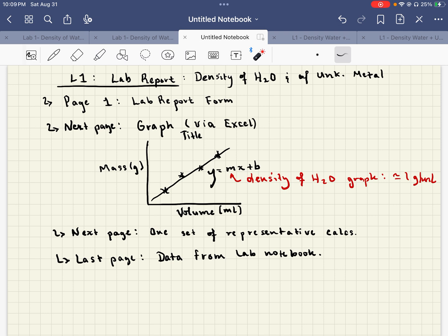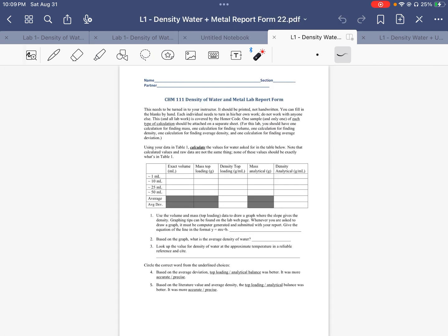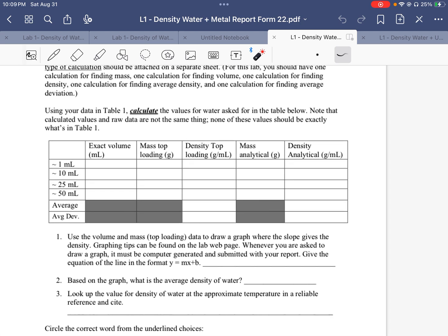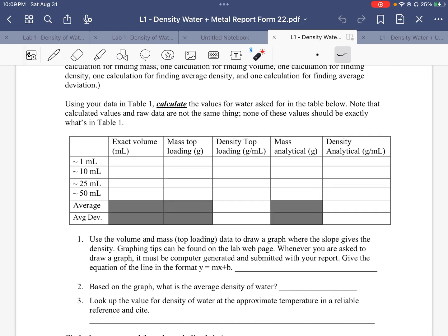So notice here, one of the things that you will have is you're going to go to your lab report form. So we'll start off with your lab report form. And the very first thing that you note is it says, using data in table one, calculate the values for water asked for in the table below. The calculated values and raw data are not the same thing.